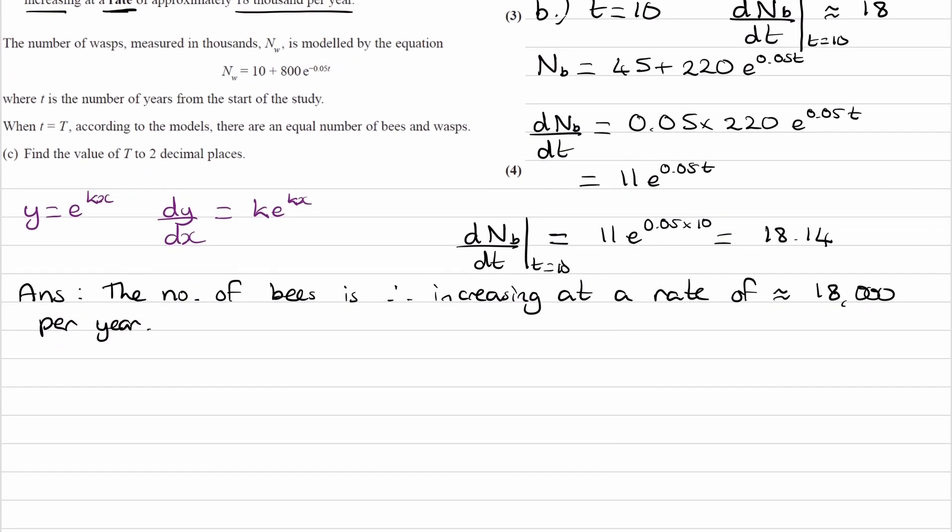Part C. We're told the number of wasps measured in thousands is modeled by this equation. And t, again, is the number of years from the start of the study.